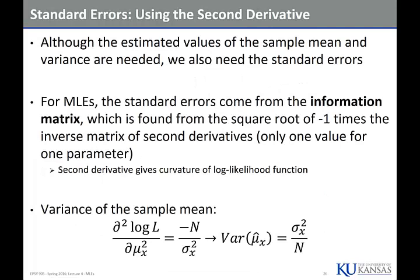One more thing we can do: if we wanted to figure out the standard error of our estimates — or the variance of it — if we took the second derivative of that likelihood function, we would end up with the observed information matrix. If we take the inverse of that times negative 1, we get the variance. Take the square root of that, we get the standard error. Remember the standard error of the mean? If you did a sample over and over again with the same sample size and jotted down all the means, they form a normal distribution — that's the central limit theorem. The standard deviation of that was the standard deviation of the sample over the square root of N — the standard error of the mean. Calculus gives us that.